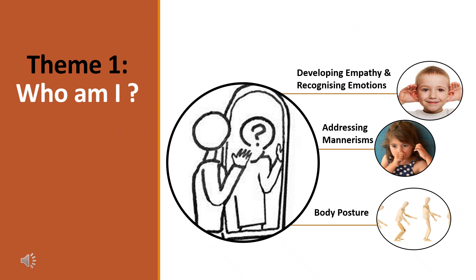In order for a child to understand social skills, they must first understand who they are. This can firstly involve developing empathy and recognising the emotions of others and how to respond to them. This can also involve addressing mannerisms and learning what may be considered socially unacceptable behaviour such as grabbing, rocking,